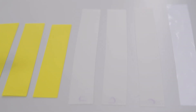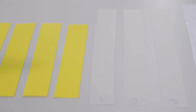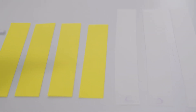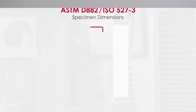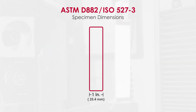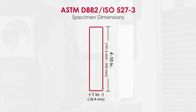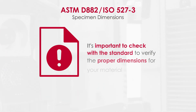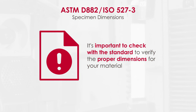Specimen length and width are dependent on expected elongation and desired results, but typically start at 1 inch wide and range between 4 and 10 inches long. It's important to check with the standard to verify the proper dimensions for your material.